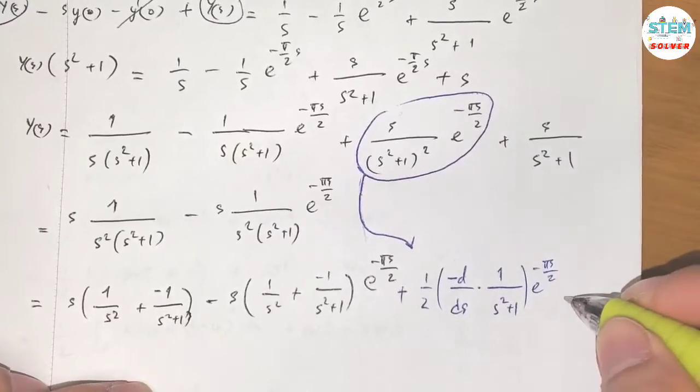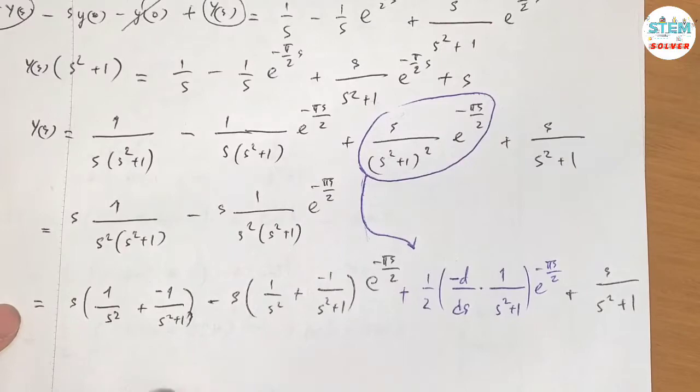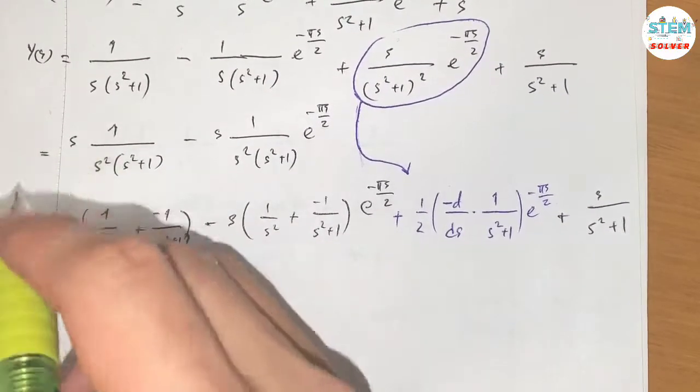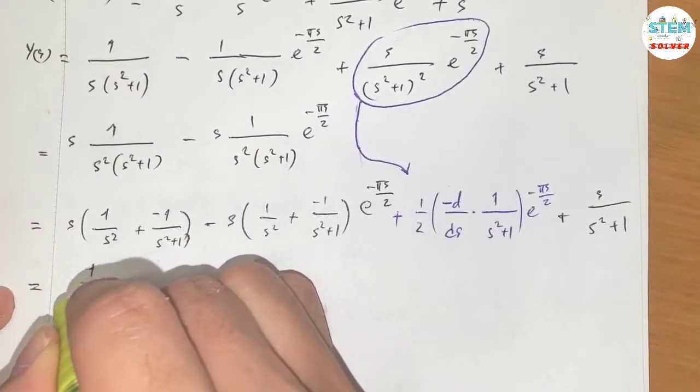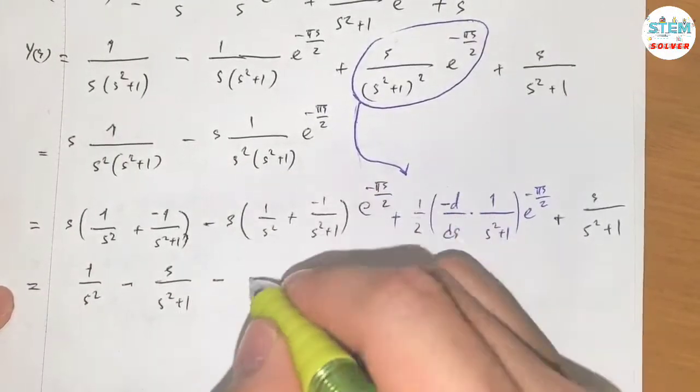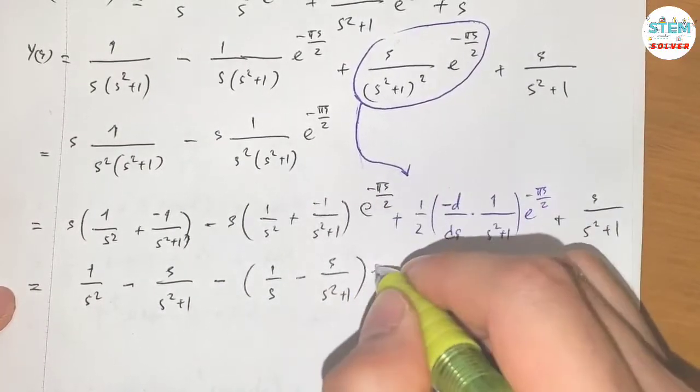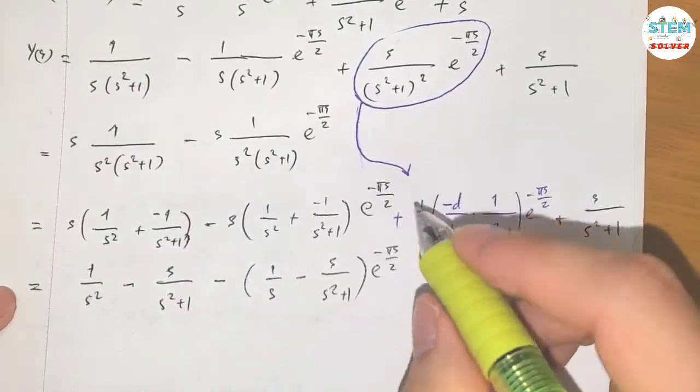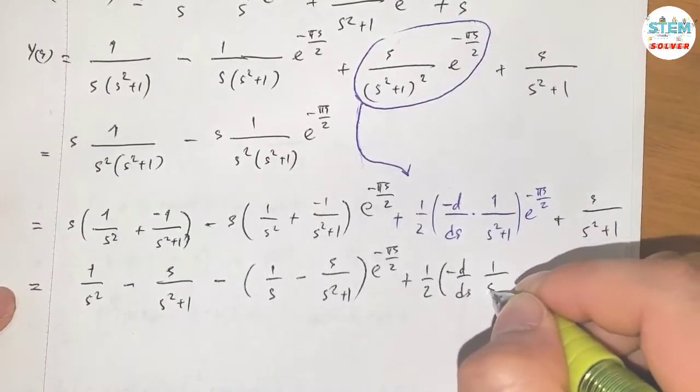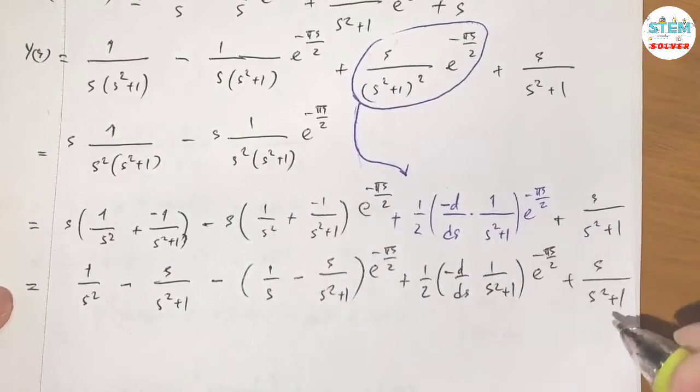Now for this one just rewrite it, we're almost done, hang in there. This one, one more step. This one I have 1 over s squared minus s over s squared plus 1 minus 1 over s minus s over s squared plus 1 e to the negative pi s over 2 and rewrite this.